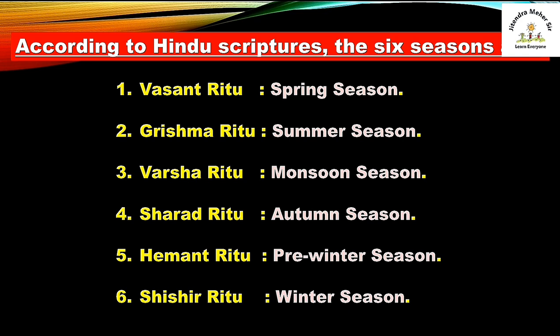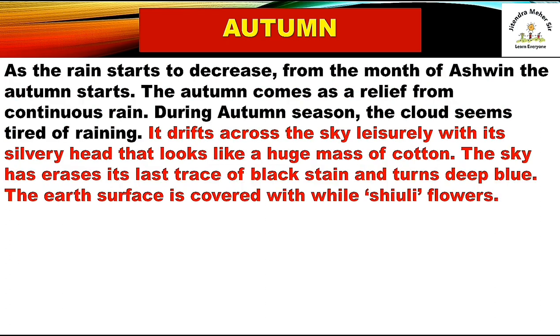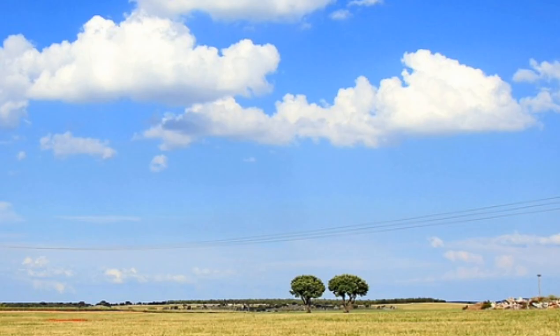In India, as the rain starts to decrease from the month of Ashwin, the autumn starts. The autumn comes as a relief from continuous rain. During autumn season, the cloud seems tired of raining and drifts across the sky leisurely with its silvery head that looks like a huge mass of cotton. The sky has erased its last trace of black stain and turns deep blue.